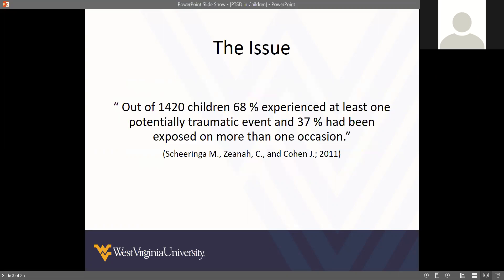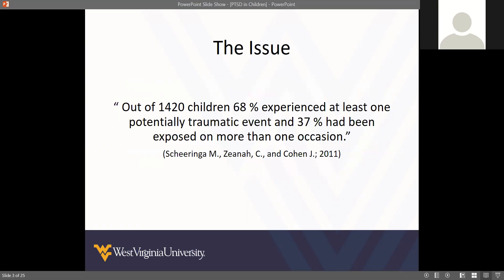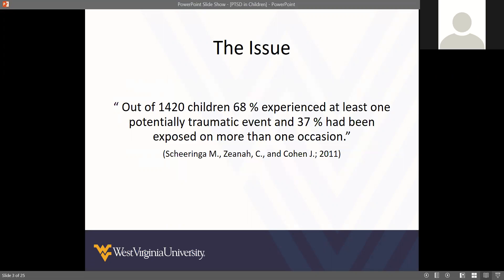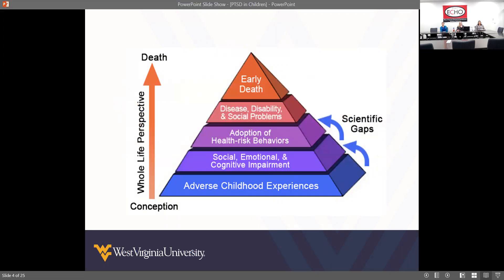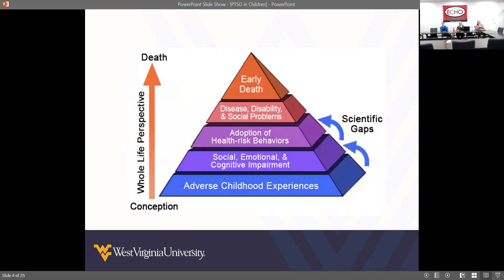It's a nationwide study that identified that children who are exposed early on to adverse experiences — it's a 10-item scale — and the higher they rate, the higher risk they are at major health risks and early death. When they have that adverse childhood experience, it leads to social, emotional, and cognitive delays, as well as increased risk for diseases and early death.